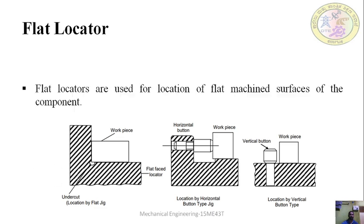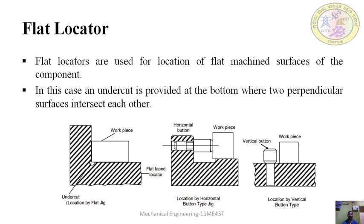This is the flat locator. Flat locators are used for the location of flat machined surfaces of the component. In this case, an undercut is provided at the bottom where two perpendicular surfaces intersect. You can see here there is an undercut where the two surfaces of the locator meet. This undercut matches with the workpiece so it will not allow the workpiece to move — it fixes the workpiece firmly and prevents further motion.